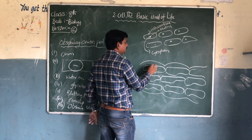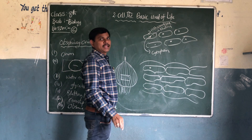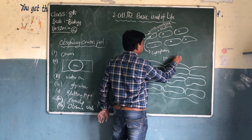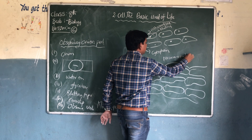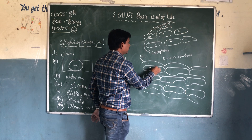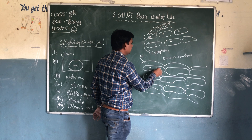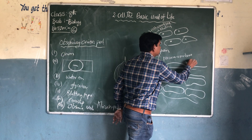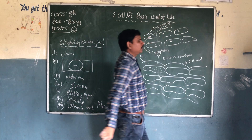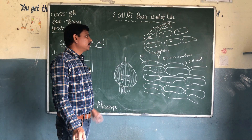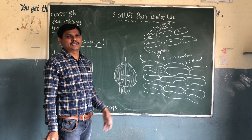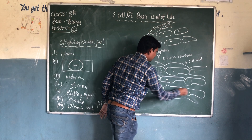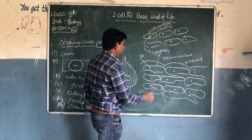Every cell has a boundary layer — this is called the cell membrane. Another name of cell membrane is plasma membrane. Inside, the nucleus is there. The liquid substance inside the cell is called cytoplasm. In onion peel cell, there is another extra layer. This extra layer is called the cell wall. In all plant cells, this extra layer is there. This cell wall is not present in animal cells. So this is the structure of the cell in onion peel.